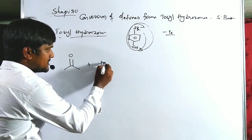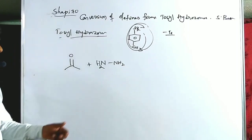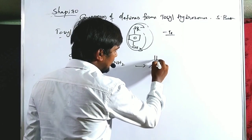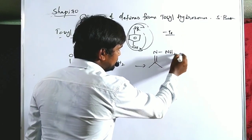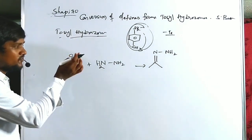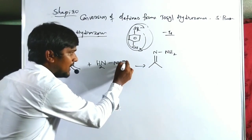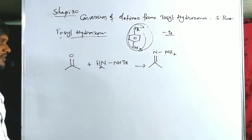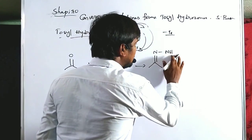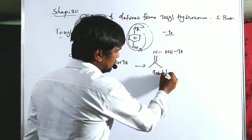The 'O' in tosylhydrazone means ketone — so this came from a ketone. Whenever a ketone is treated with hydrazine, it becomes a hydrazone with the elimination of a water molecule. Now here, instead of hydrazine, we take tosyl hydrazine. Tosyl hydrazine treated with a ketone compound gives the tosyl hydrazone, which is the basic starting material for the Shapiro reaction.